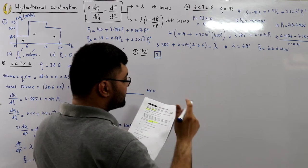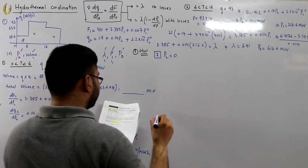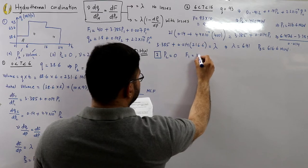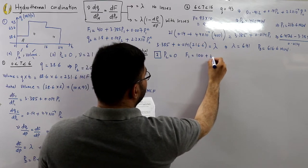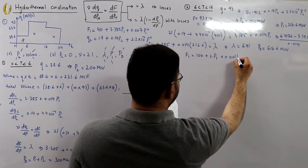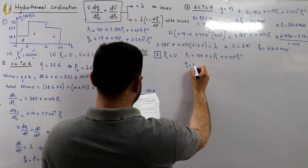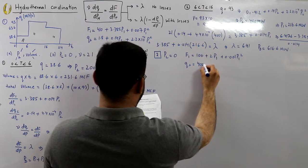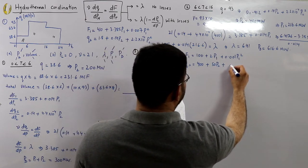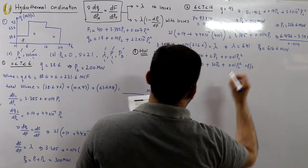Now for Example 2: losses are negligible in a hydrothermal system. The thermal plant (Plant 1) has cost function: f1 = 100 + 2·P1 + 0.001·P1². The hydro unit has discharge: q2 = 400 + 50·P2 + 0.01·P2² in cubic feet per second.